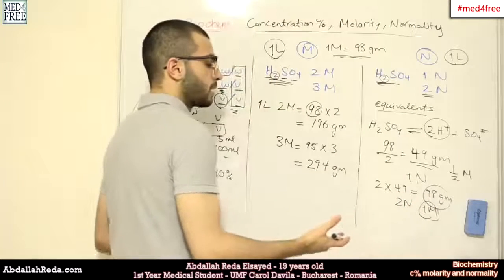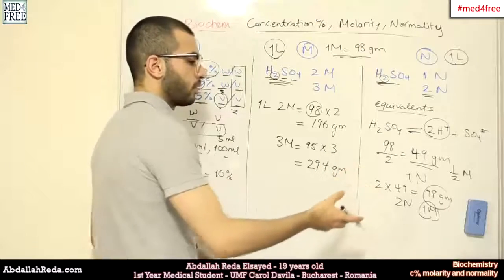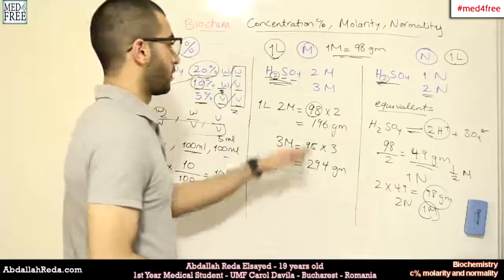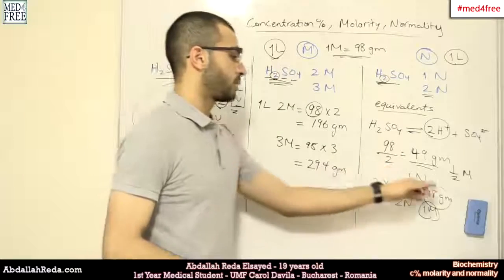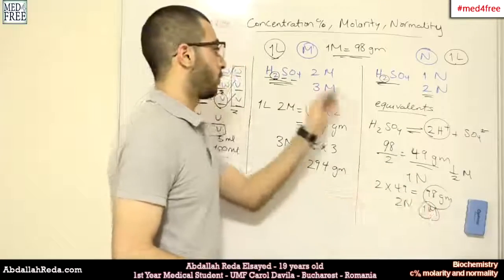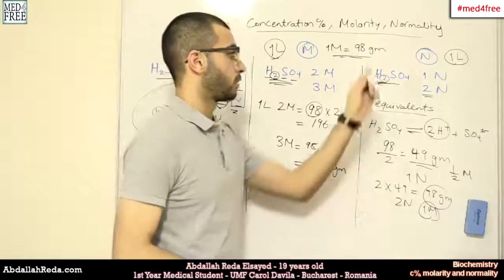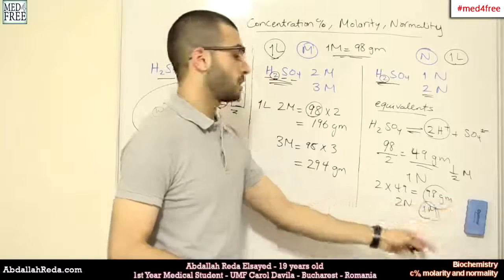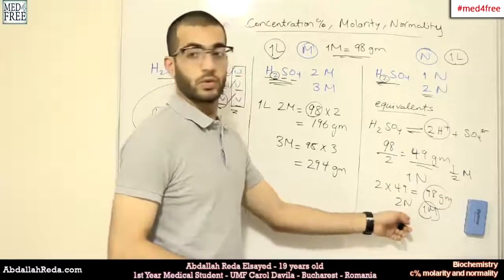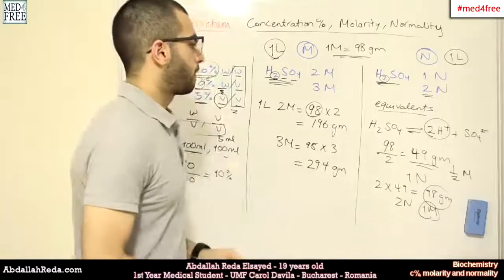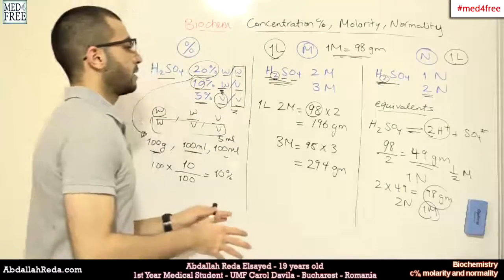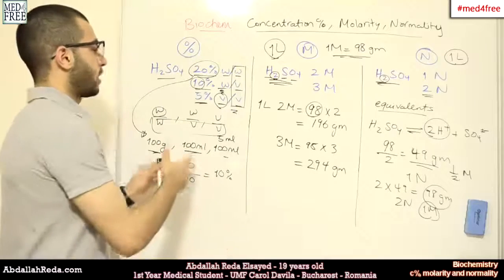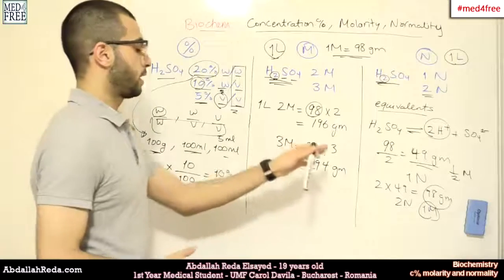So, it depends on the method of measurement that you're using. If you're using molarity and you have 98 grams in 1 liter, then it will be 1 molar. If you're using normality and you have 98 grams per 1 liter, then it's 2 normal. And so on. So, simply, this is the idea of the concentration percentage, molarity and normality.